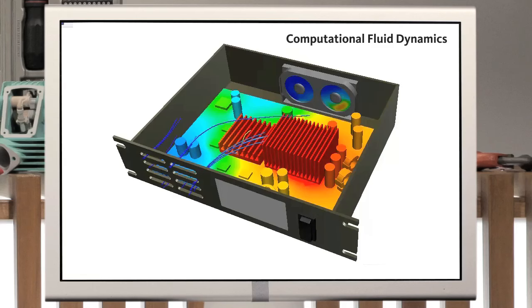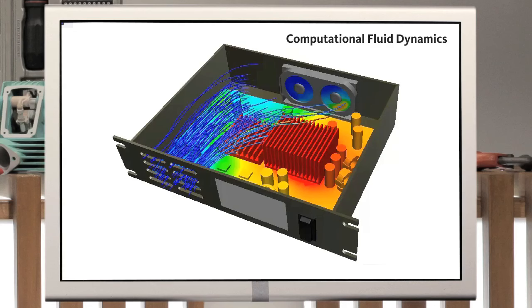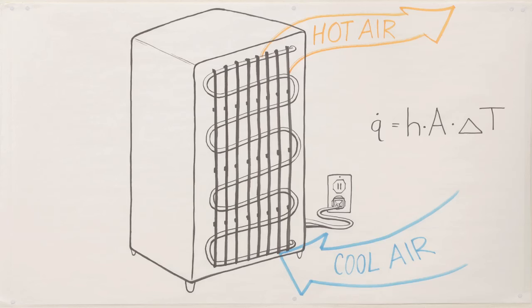You can also force convection with a fan, like in your computer. Similar to conduction, the rate at which heat is lost is equal to a heat transfer coefficient times the area of the surface exposed to the fluid times the temperature difference between the surface and the fluid. Heat sinks have fins to maximize that surface area.